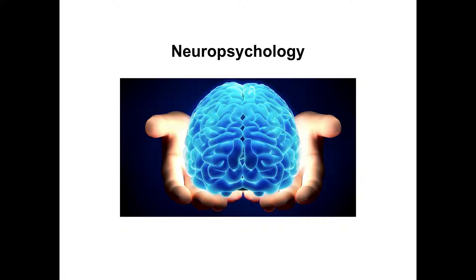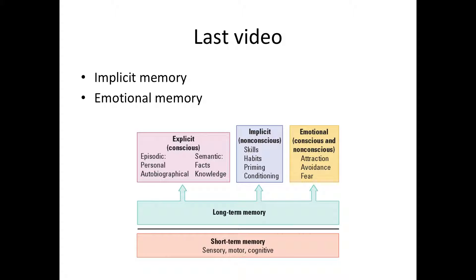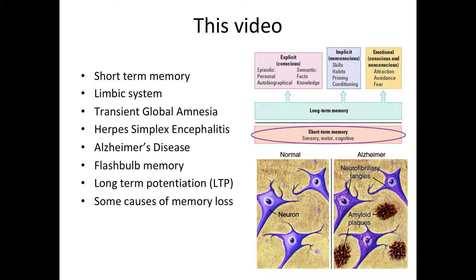Hi everyone and welcome back to Neuropsychology. In the last video we talked about implicit memory and emotional memory, which are two parts of long-term memory. In this video we are going to talk about short-term memory, and then after that we will talk about the limbic system in more detail, transient global amnesia, herpes simplex encephalitis, Alzheimer's disease, flashbulb memories, long-term potentiation or LTP, and some other causes of memory loss.